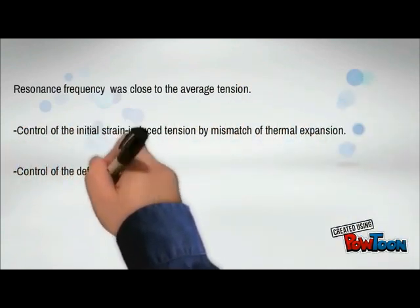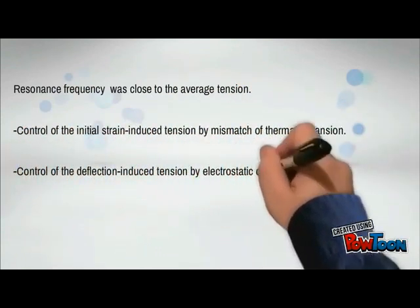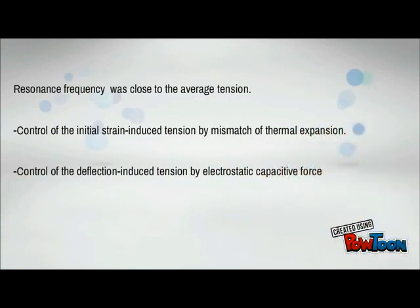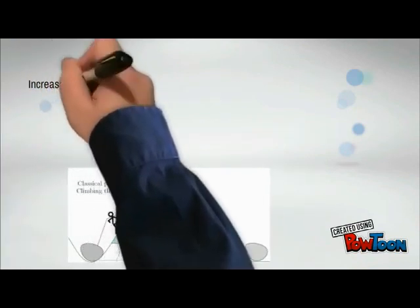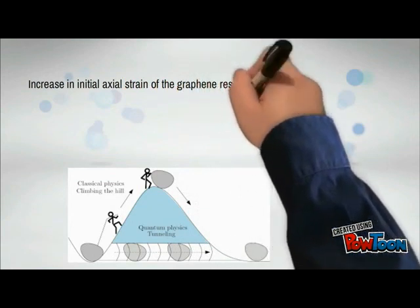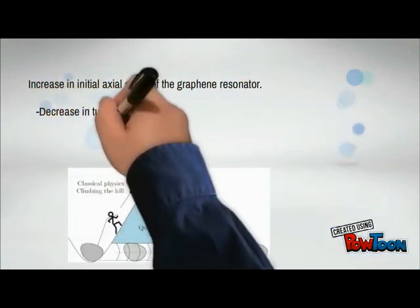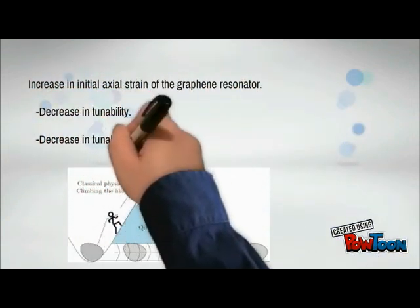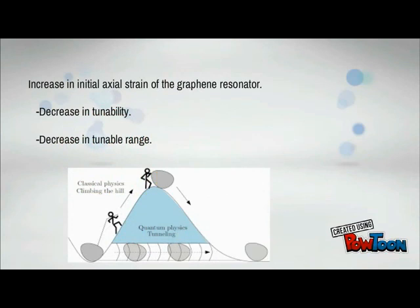By relating the results, we could tell that the resonance frequency of the graphene resonators was very closely related to the average tension. We saw that the initial strain induced tension could be adjusted by the mismatch of thermal expansion coefficient. On the other hand, the deflection induced tension could be controlled by the electrostatic capacity force due to the gate voltage. We have concluded that the resonance frequency can be tuned through strain engineering.